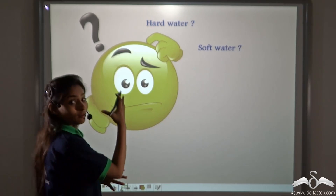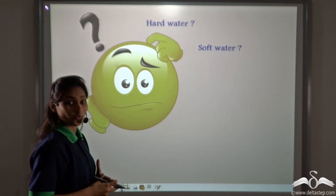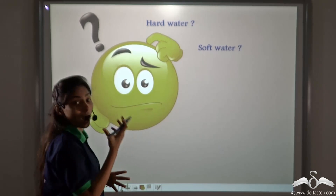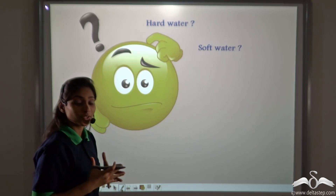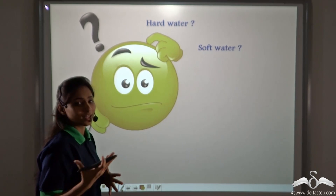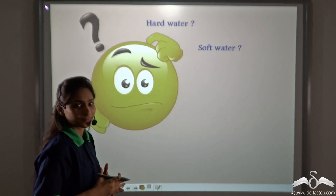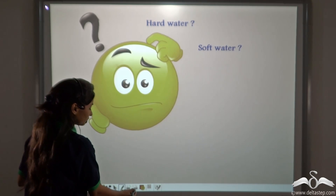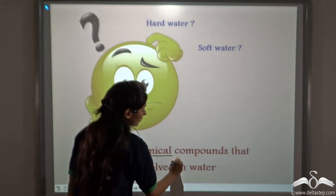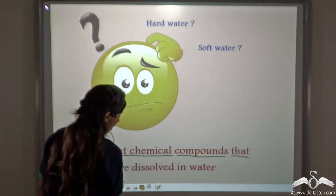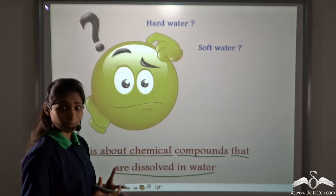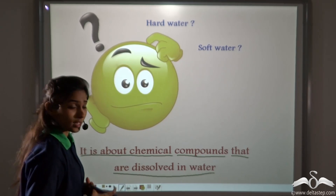Do you know that there is something called hard water and soft water? Well, don't be confused. The term hard or soft has nothing to do with the softness or hardness of the water — it has nothing to do with the touch and feel of it. It is actually about chemical compounds that are dissolved in water. So what are these chemical compounds dissolved in water? Let's see.